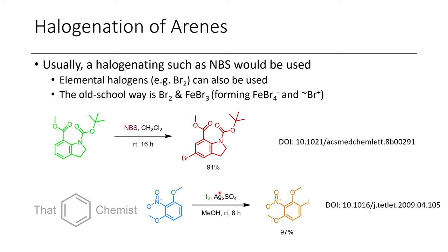In the next example, silver(I) is used to activate iodine, forming a silver(I) iodide salt so that iodine acts like an I+ reagent. The I+ selectively adds once to the benzene ring and doesn't react further, likely because the ring is already fairly deactivated by the nitro group.